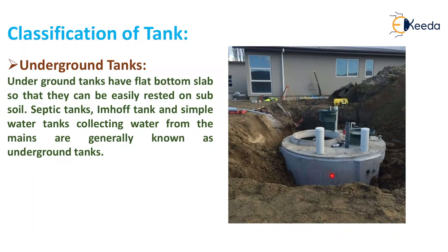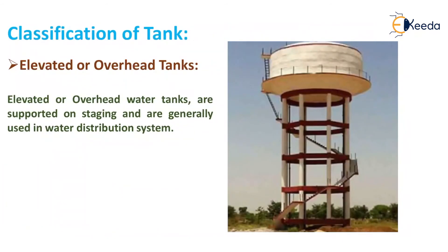Underground tanks have a flat bottom slab so that they can be easily rested on subsoil. Septic tanks, Imhoff tanks, and simple water tanks collecting water from the mains are generally known as underground tanks. Elevated or overhead tanks are supported on staging and are generally used in water distribution systems.